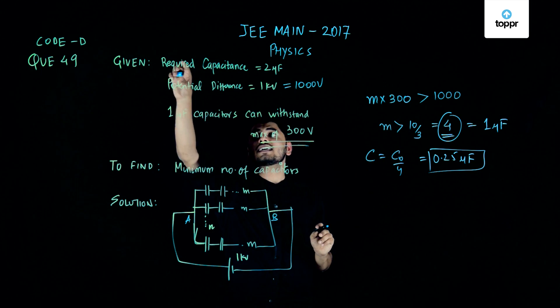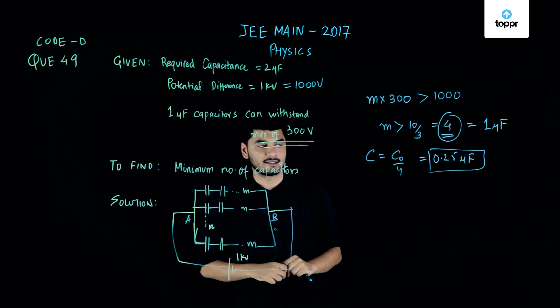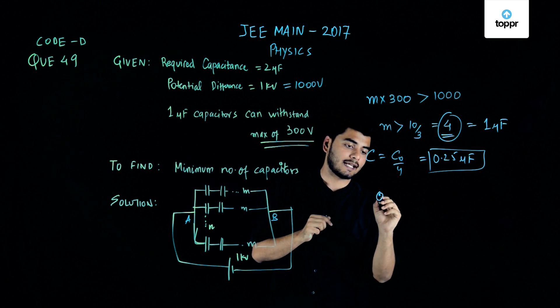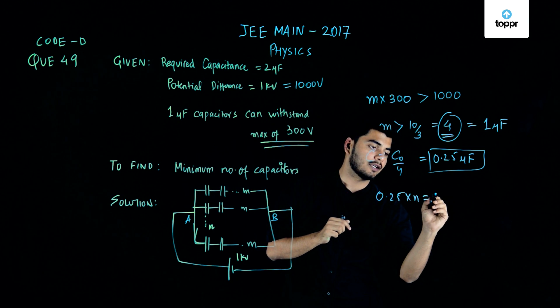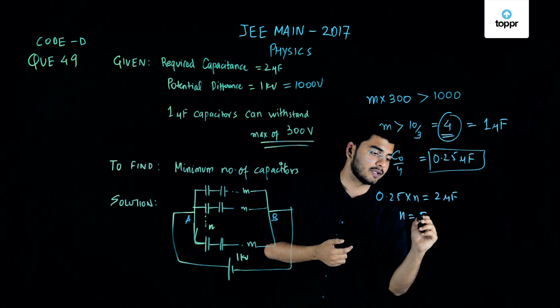Now what I need is a capacitance which is equal to 2 microfarad and all these are connected in parallel, and hence it's very simple. In order to get 2, I need to multiply this thing by a number n which must bring out 2 microfarads. If you solve this, my n comes out to be 8.